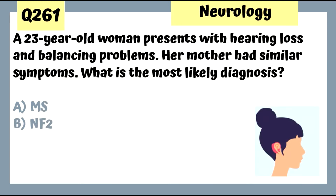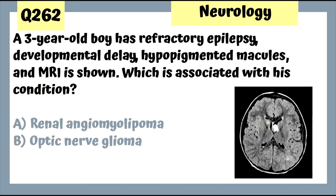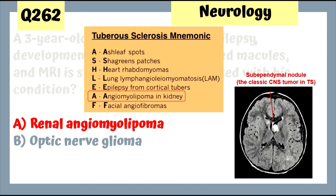Question 261: A 23-year-old woman with hearing loss and balance problems whose mother had similar symptoms has neurofibromatosis type 2, with vestibular schwannomas and imbalance. Question 262: A 3-year-old boy with refractory epilepsy, developmental delay, hypopigmented macules on MRI has tuberous sclerosis, associated with renal angiomyolipoma, rhabdomyomas, and facial angiofibromas.